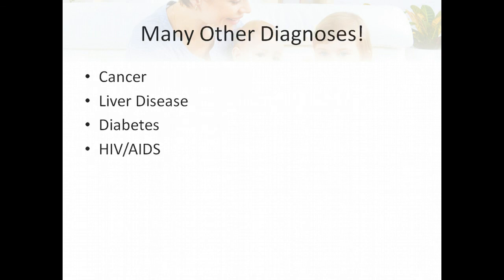There are many other diagnoses that impact nutrition in children — cancer, liver disease, diabetes, HIV, AIDS — similar to what we see in adults, but when it's in kids, they really need a lot of support as well. This was a very brief overview of some pediatric nutrition conditions. The Academy of Nutrition and Dietetics Pediatric Nutrition Care Manual provides a lot of information on all of these various diseases, nutrition interventions, and nutrition assessment, and I would really encourage you to use that as a resource.